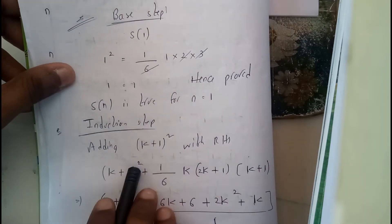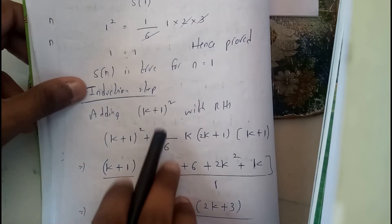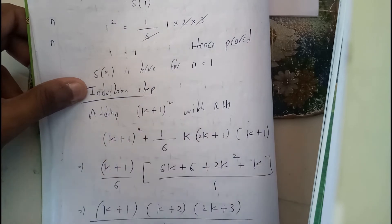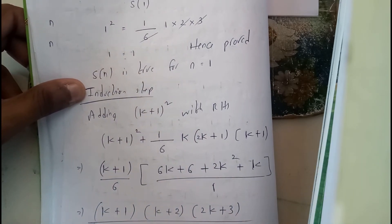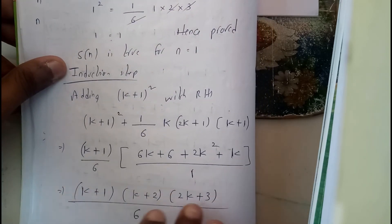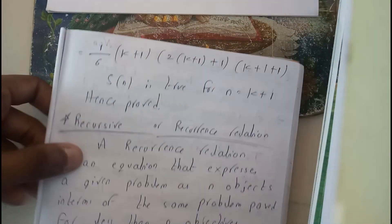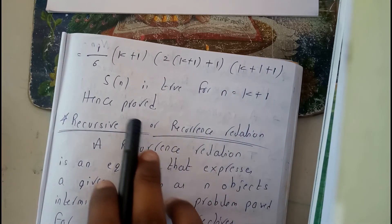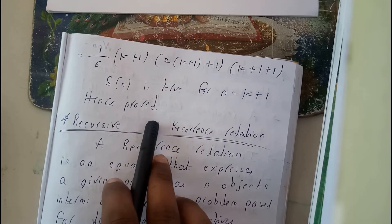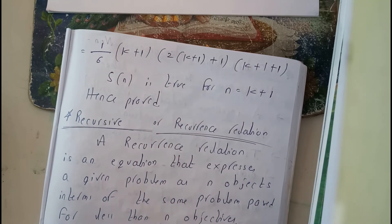To summarize: the same method applies — the base condition is verified with n=1, the induction step substitutes k, then replaces with k+1 on the RHS and adds the (k+1)th term, so that the final expression matches in terms of k+1. At the end we write 'hence proved.' I hope you're clear with mathematical induction. Thank you for watching!